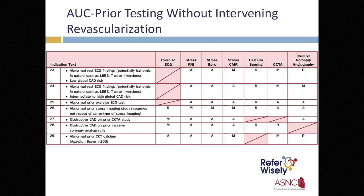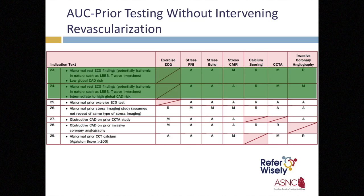The presence of a new left bundle branch block may be due to ischemic heart disease. As shown in the table from the 2013 paper, for patients with a new left bundle branch block and low, intermediate, or high global CAD risk, cardiac imaging can be appropriate. Specifically, both stress radionuclide imaging and stress echocardiography are appropriate. Stress cardiac MRI and coronary CT angiography receive appropriate or may-be-appropriate ratings depending on pretest CAD risk. Invasive coronary angiography may be appropriate only in intermediate to high CAD risk patients. Calcium scoring is rarely appropriate.